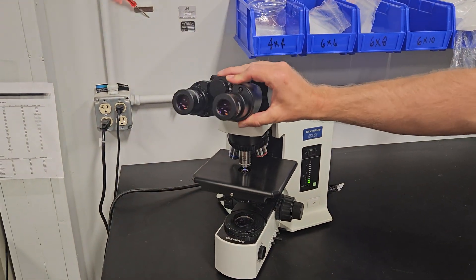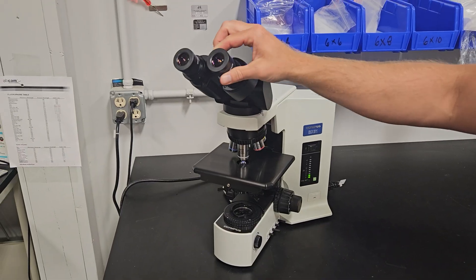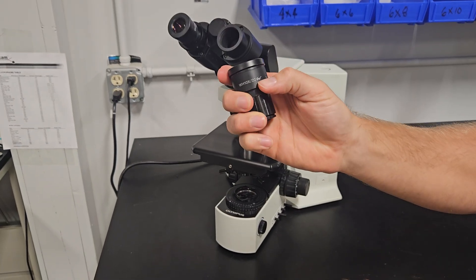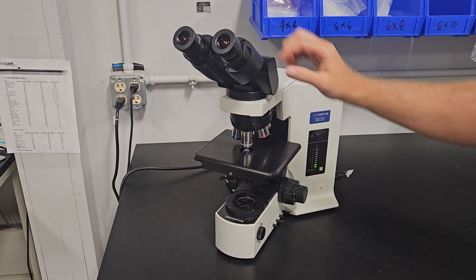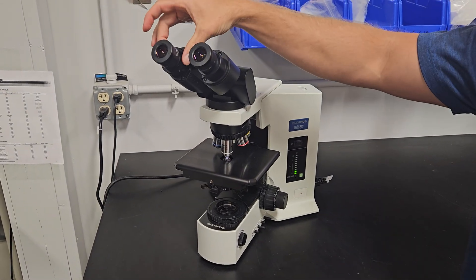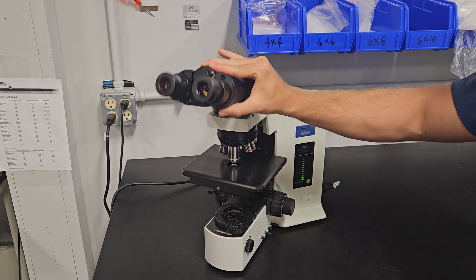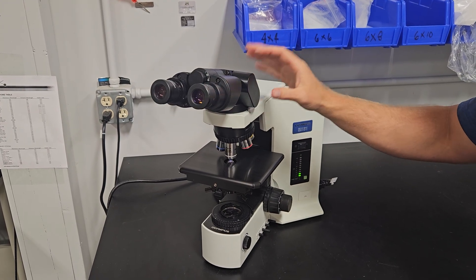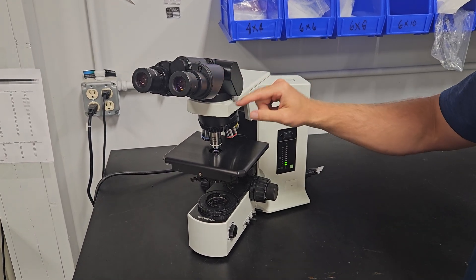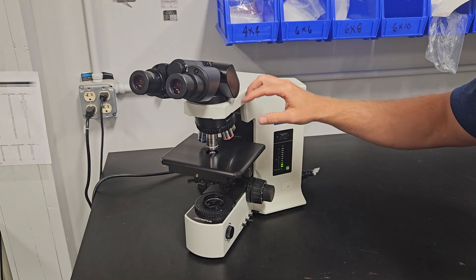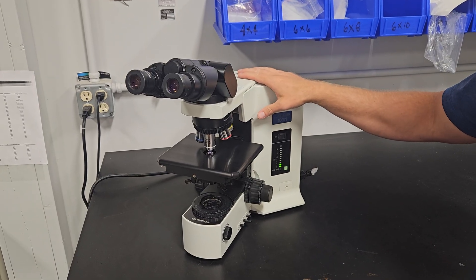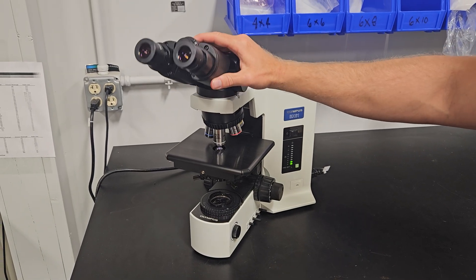So first, we have a tilting head on this scope, 10X by 22 millimeter field of view eyepieces. We'll put some rubber eye guards on here for comfort. You have a diopter tube on this side, nice tilting feature. You can put a trinocular head on here, you might have a fixed binocular head, or you might have an intermediate piece underneath here that sends light to the camera. We call it a U-TRU.